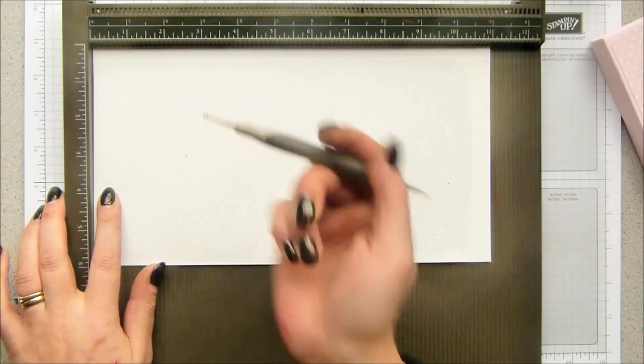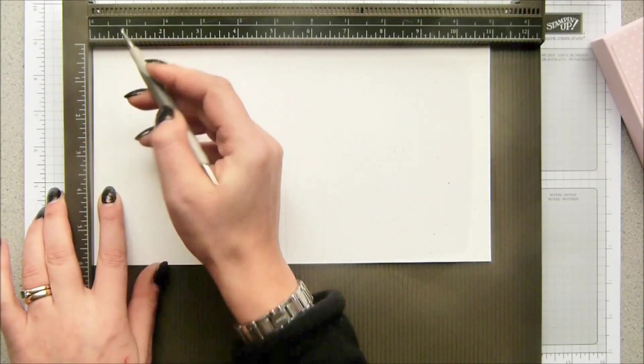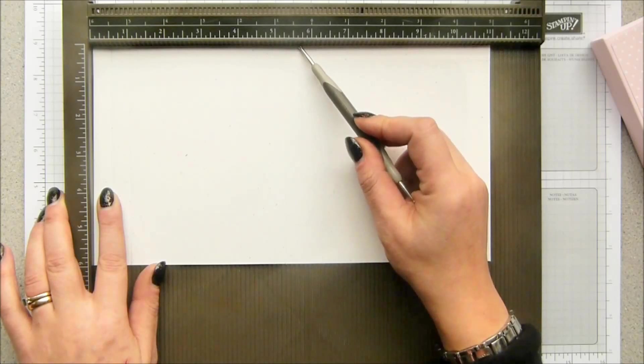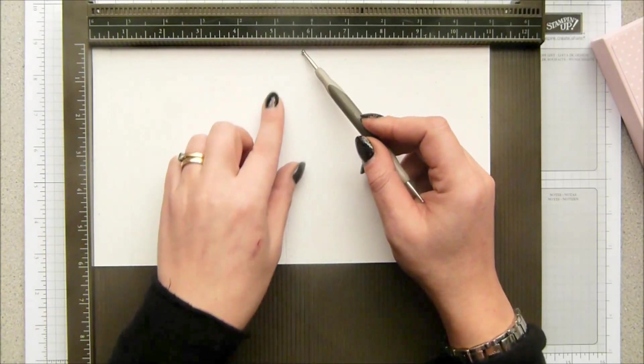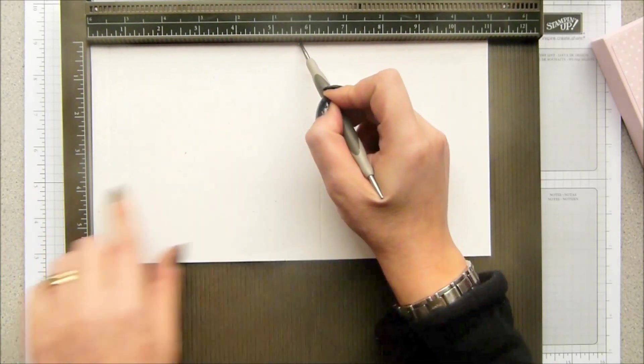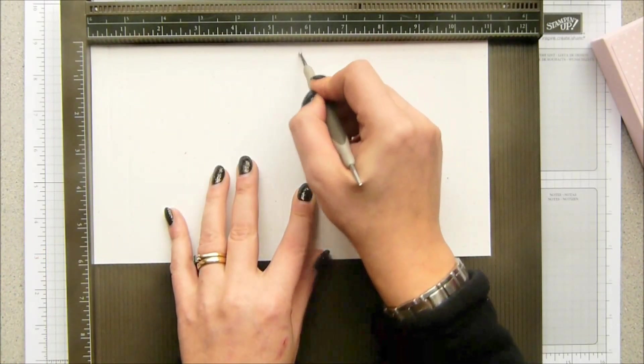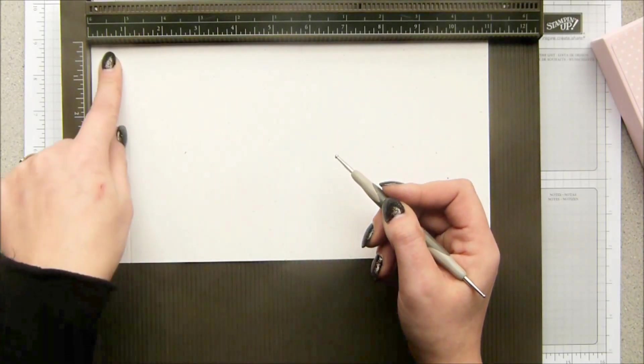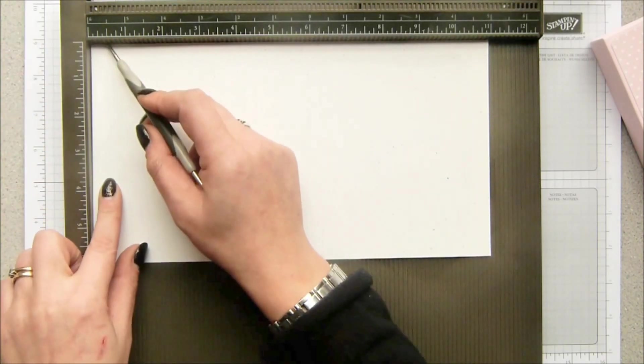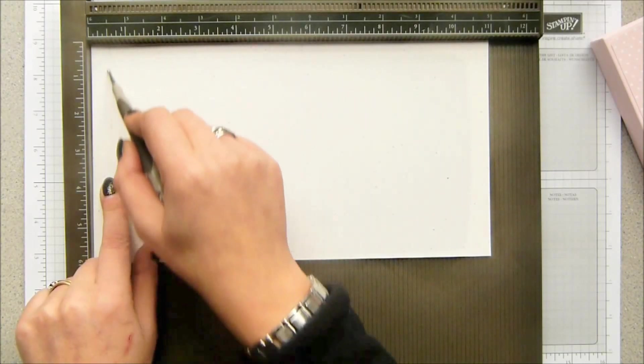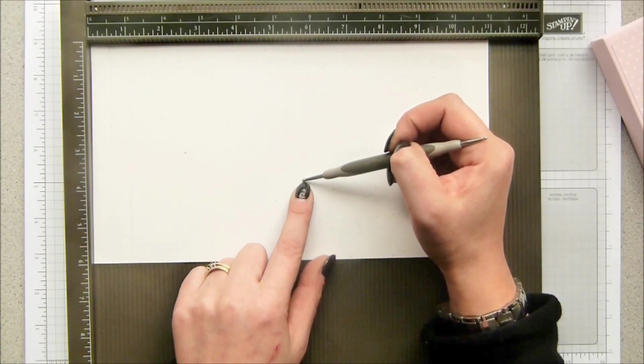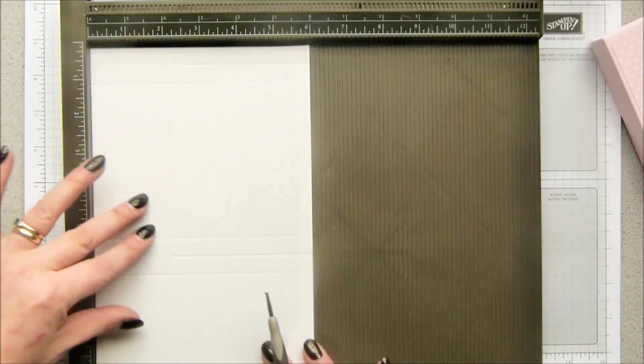You score at half an inch down to the four inch mark, and then the same at five and three quarter inch mark, scoring down to roughly the four inch mark. In metric, you would do this at one and a quarter centimeters and fourteen and three quarter centimeters.